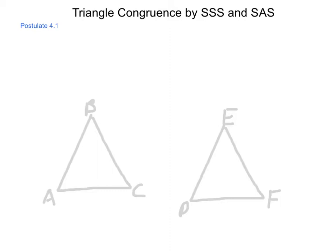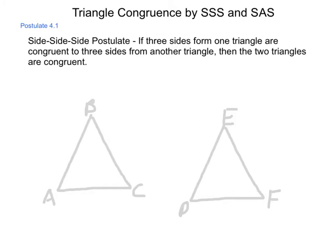We're going to start out with what's called a side-side-side congruence. So that brings us to postulate 4.1, the side-side-side postulate. It states that if three sides from one triangle are congruent to three sides from another triangle, then the two triangles are congruent.